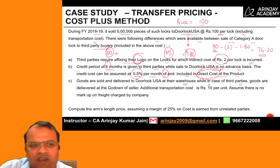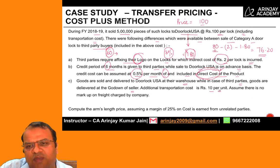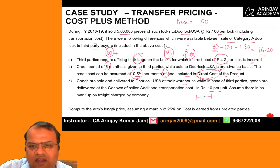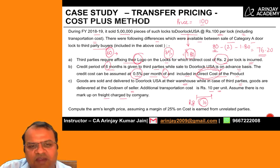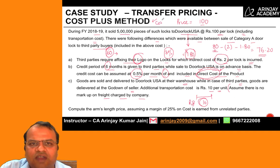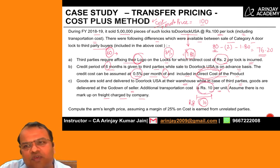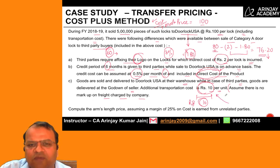Goods are sold and delivered to Door Lock USA at their warehouse, while in the case of third parties, goods are delivered at the godown of the seller. The additional transportation cost is 10 per unit. You are told to assume there is no markup on the freight charged. So in cost plus method, when making adjustments, I will not apply a markup on this particular cost.